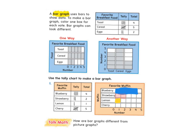And then let's look at cherry. So five people like cherry. So I'm going to color in five boxes. One, two, three, four, five boxes.